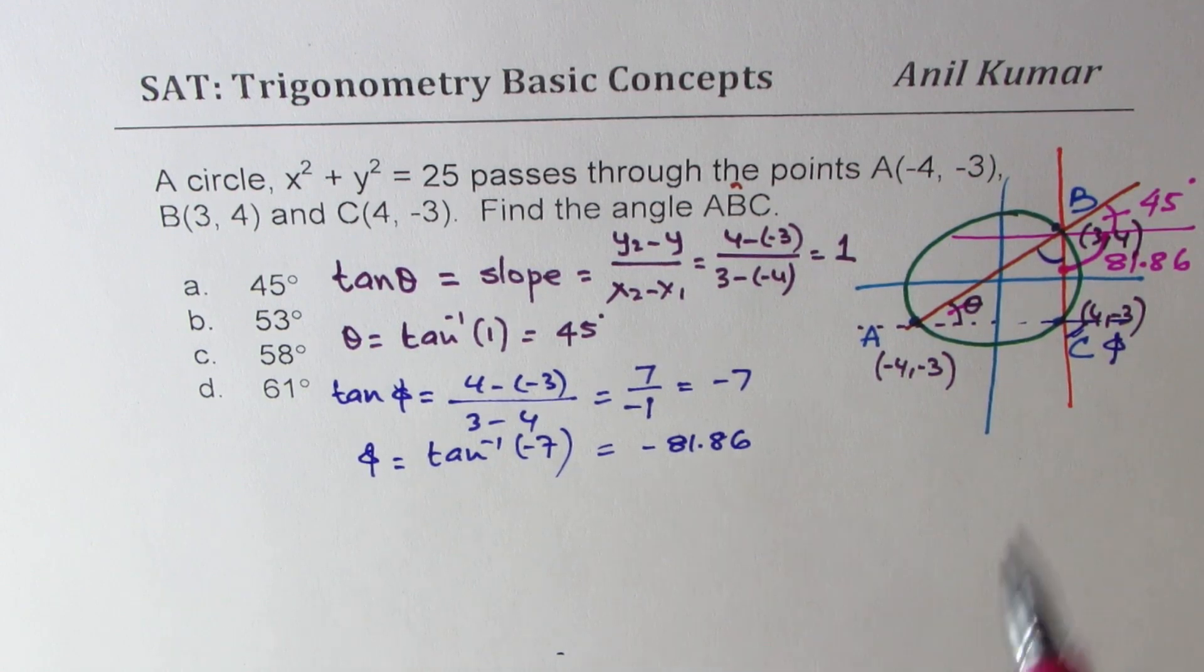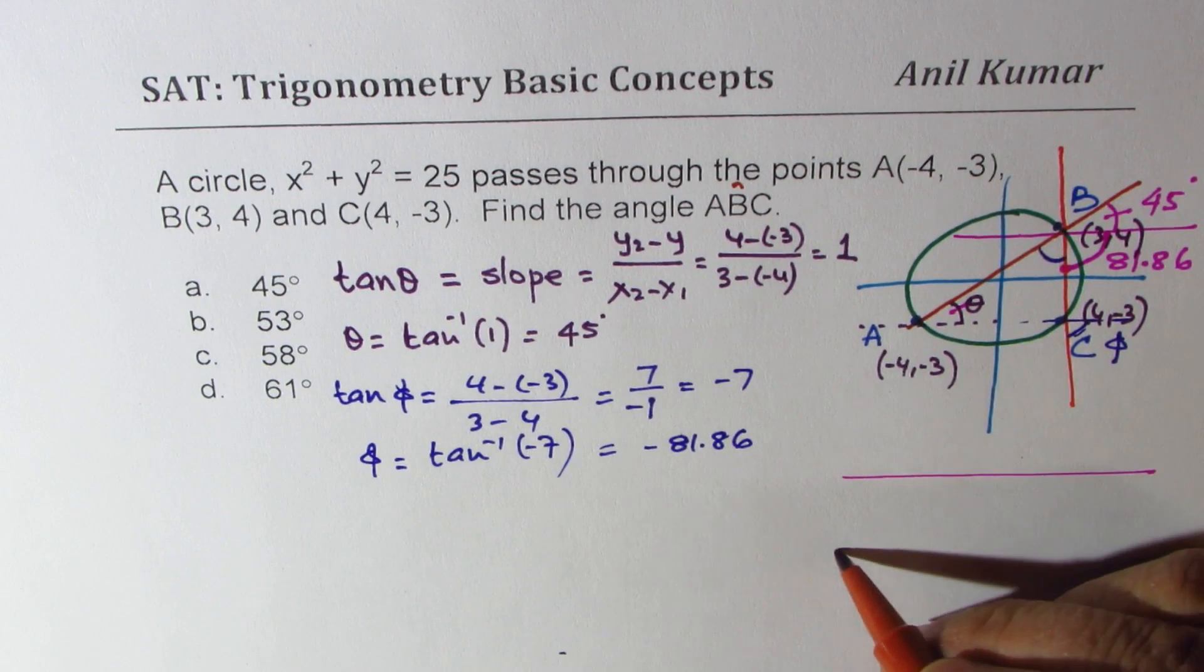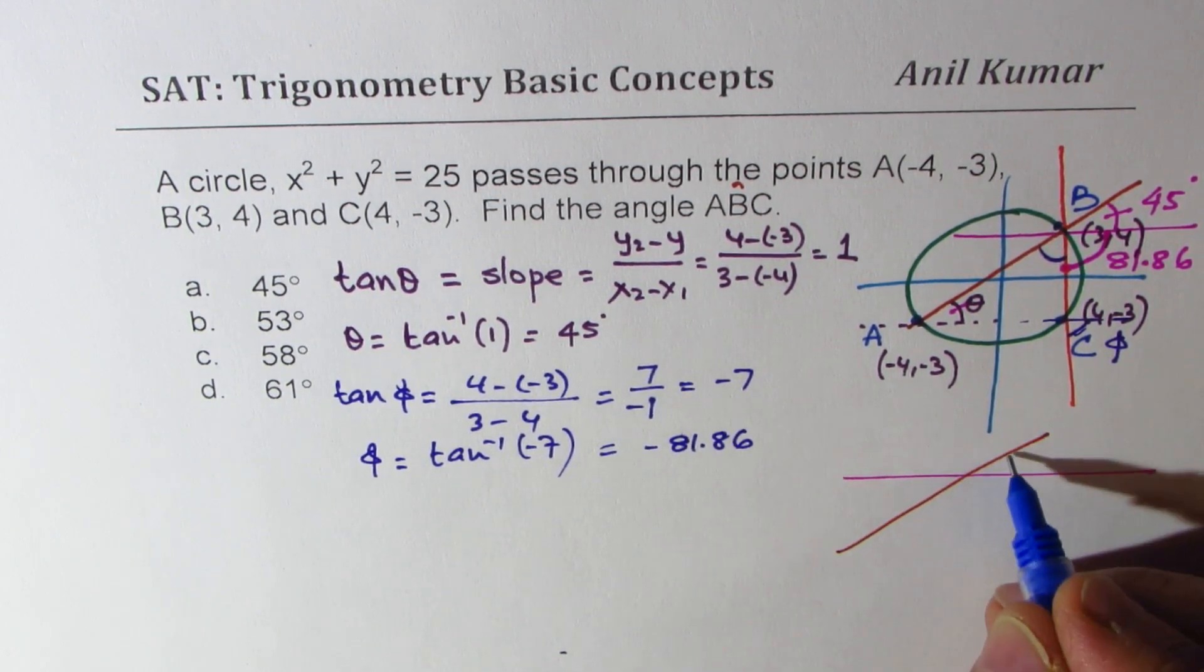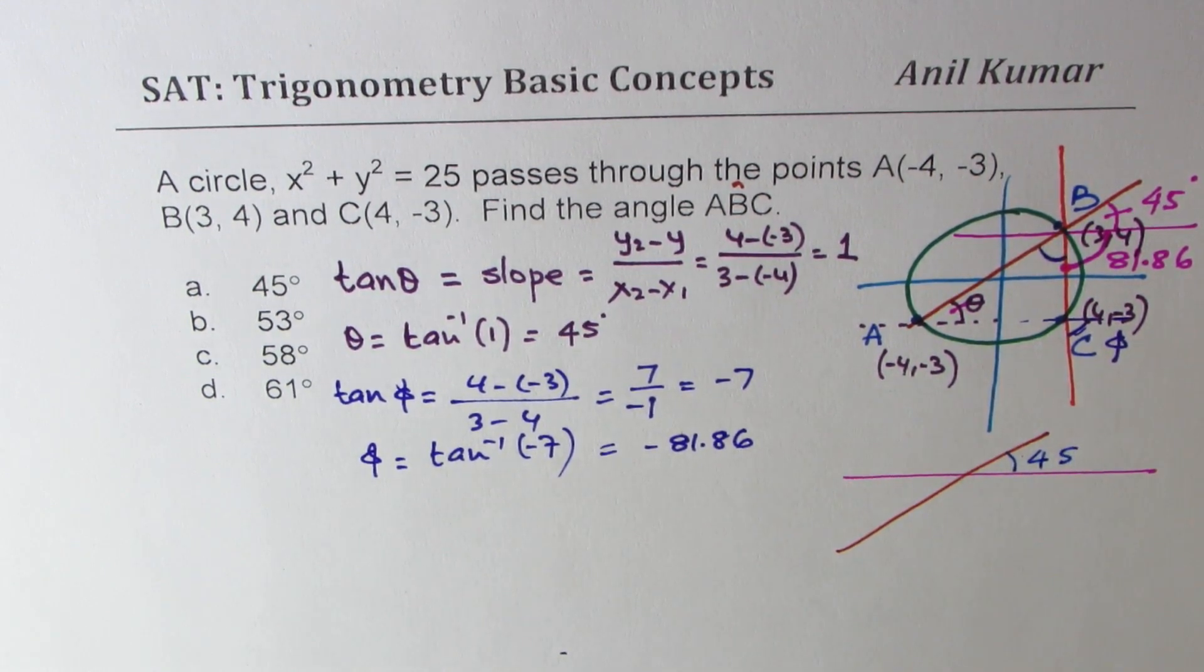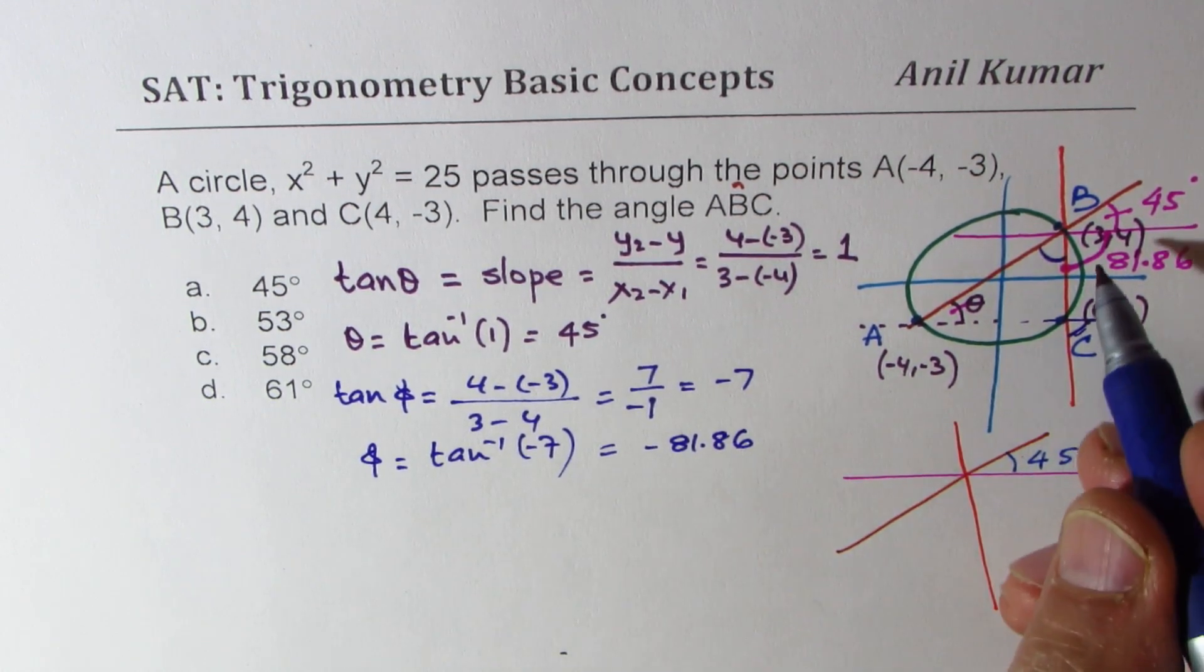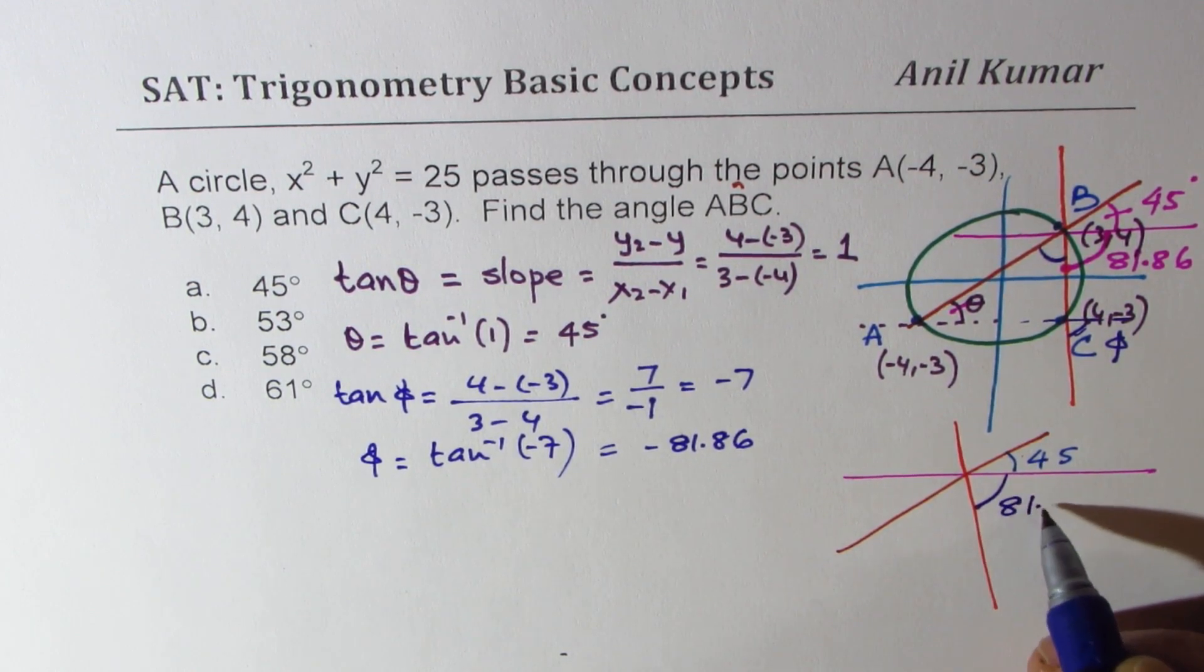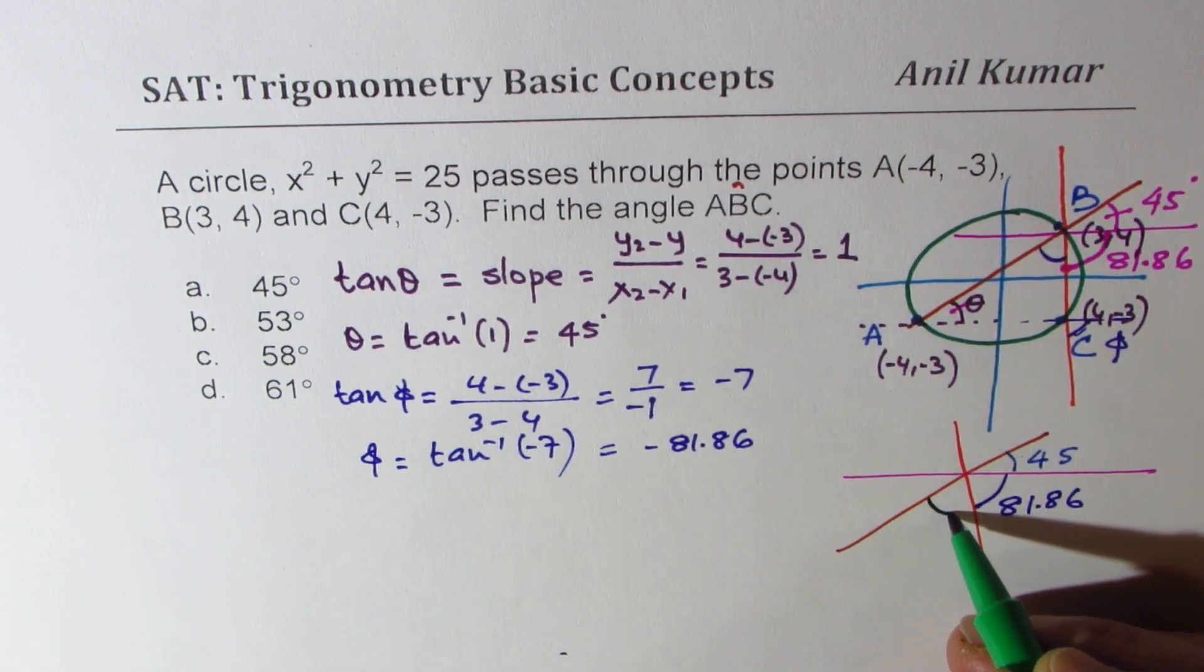So what do you notice here? Let me rewrite, redraw this portion. So in this portion we have a line going like this where one of the angles is 45, and then we have another line which is kind of going like this, and this particular angle is 81.86.